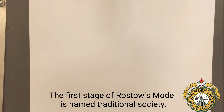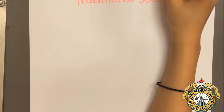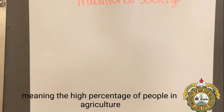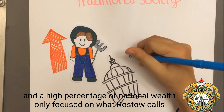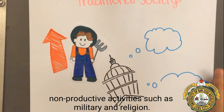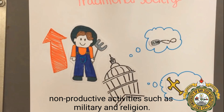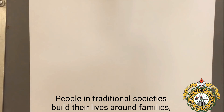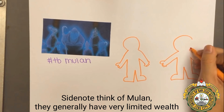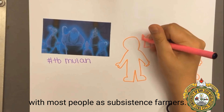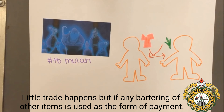The first stage of Rostow's model is named the Traditional Society. In a traditional society, there is a lack of development, meaning a high percentage of people in agriculture and a high percentage of national wealth focused on non-productive activities such as military and religion. People in traditional societies build their lives around families, local communities, and religious beliefs, often very similar to those of their ancestors. They generally have very limited wealth, with most people as subsistence farmers. Little trade happens, but if any, bartering is used as the form of payment.